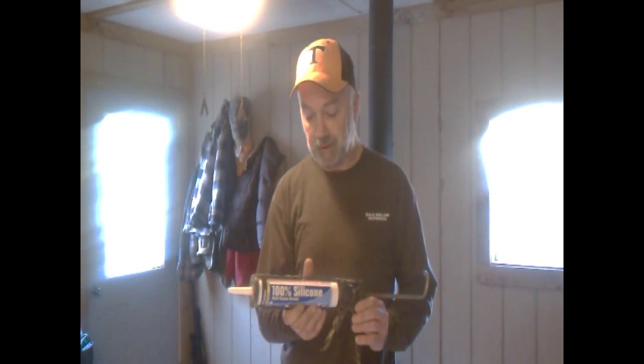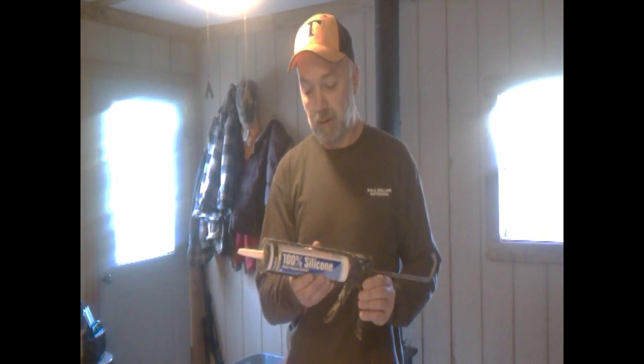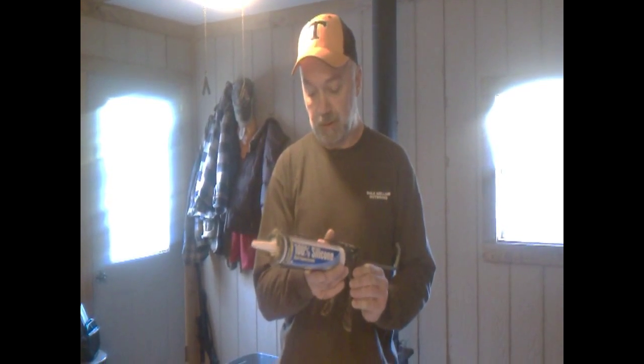The next thing is a caulking gun with a tube of 100% silicone in it. We will need the silicone to seal the junction box to the laminate after we get it on.